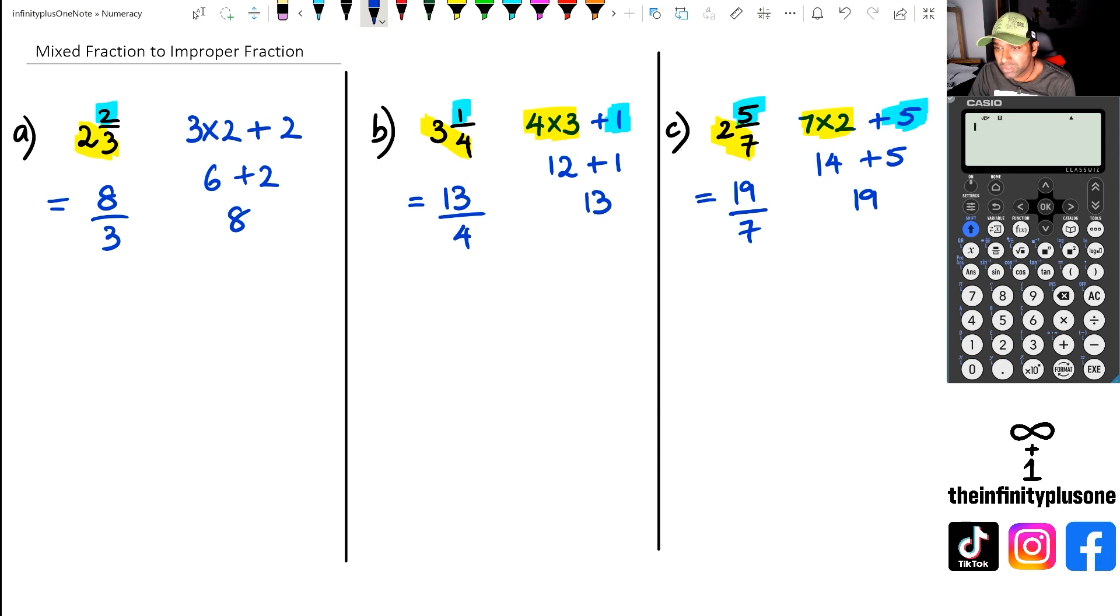Now you can actually do this in the calculator as well. Various calculators have different buttons. In this particular calculator, we're going to click on shift and the fraction button, and we can put in two and two-thirds. If we put in two and two-thirds and hit equals, that's going to convert it to an improper fraction which is eight-thirds.